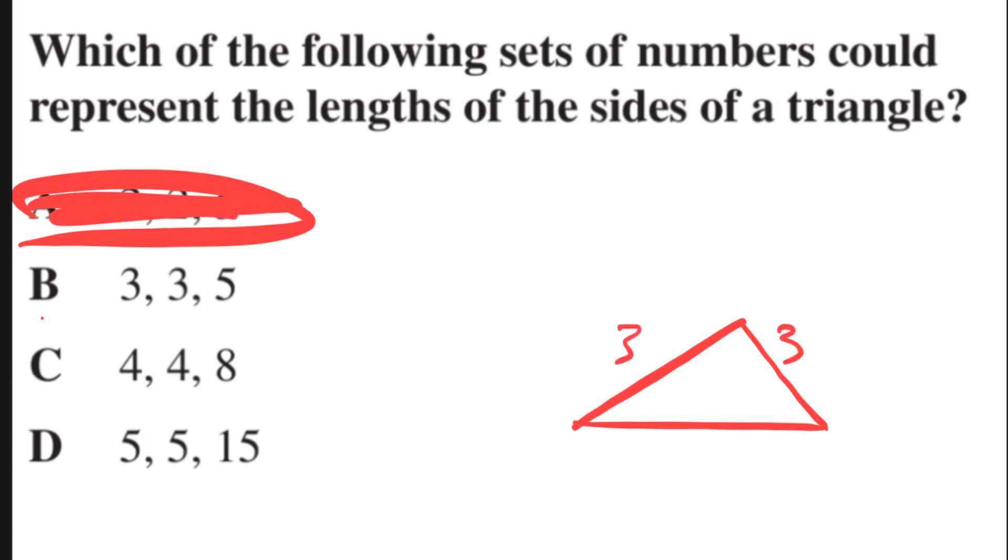B is 3, 3, and 5. Alright, so let's start here. If we go up and down, that's 6. 6 is greater than 5. If we start here, we go 3, then 5. That is greater than 3. And then if we start here, we go 5 and 3. That's greater than 3. So any two sides of this triangle is longer than a third side. So therefore, B is the correct answer.